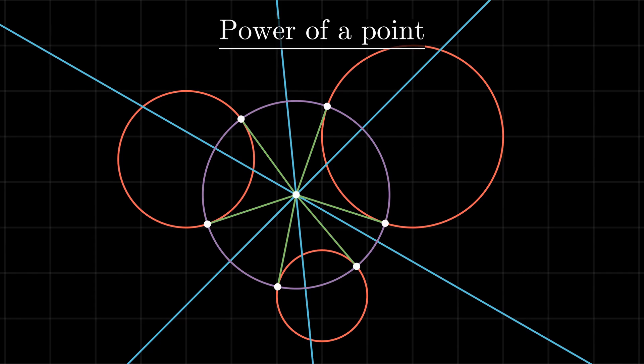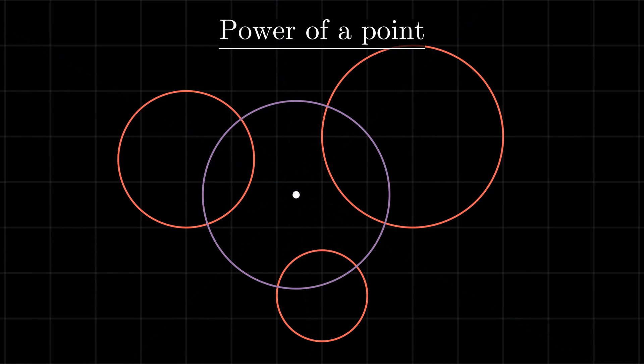Just like before, inverting on a circle centered at the radical center with radius equal to the tangent's length keeps all three circles fixed in place. Again, in case the circles intersect and the radical center lies inside the circles, the inverted circle gets flipped around the radical axis but otherwise remains unchanged.